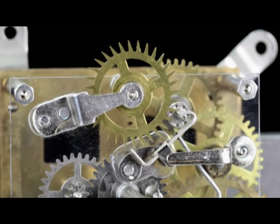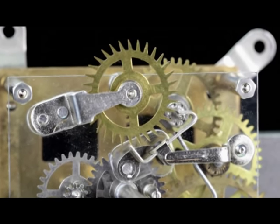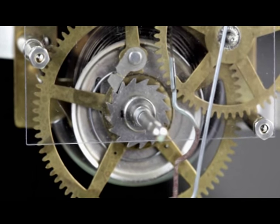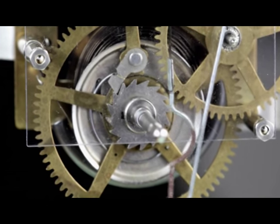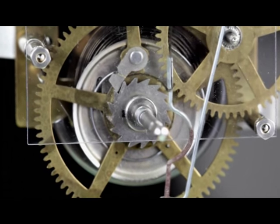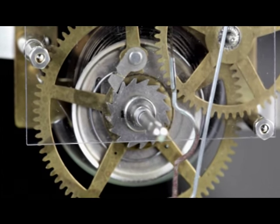The escape wheel is always the last wheel in the going train. Traditionally, wheel number one is the largest wheel in the going train. It carries the power source and is referred to as the great wheel. It is always the first wheel in the train.